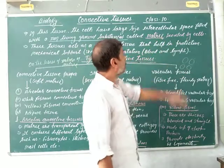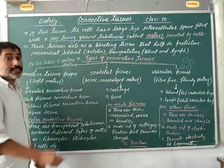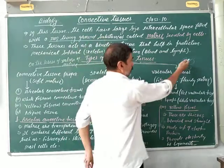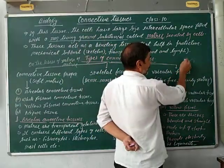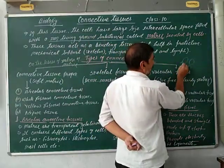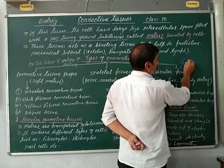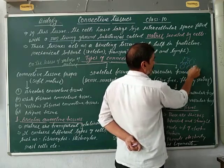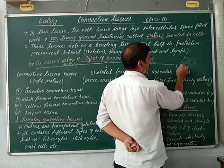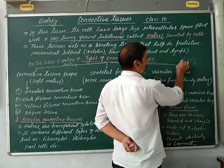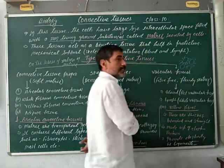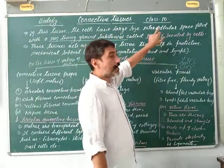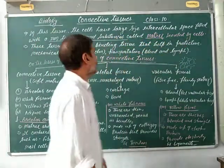Matrix is secreted by cells. From this figure, this is the cells. This is the non-living ground substance called matrix. Matrix is present around the cells in the intercellular space. This non-living ground substance called matrix is secreted by the cells.